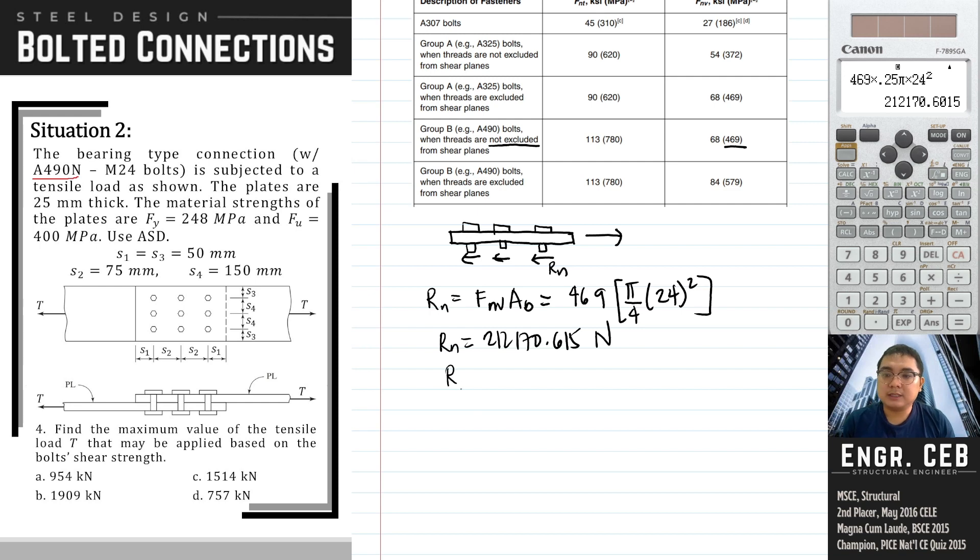To get the allowable shear strength of one bolt, we divide this by the factor of safety. I've already used the value in kilonewton, I have divided the Rn by 1,000. So divide this by 2. We now have the allowable shear strength of one bolt, and that is 106.085 kilonewton. This is now the allowable shear strength of one bolt.